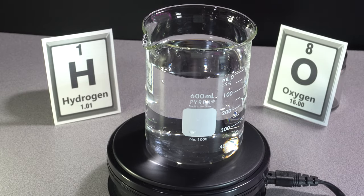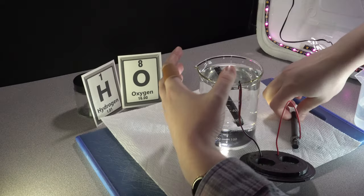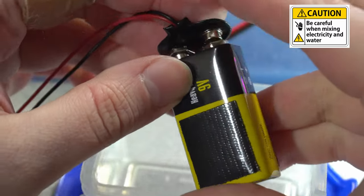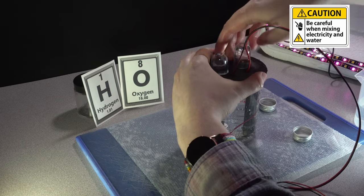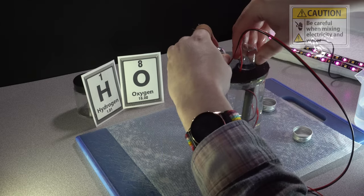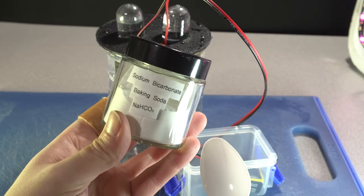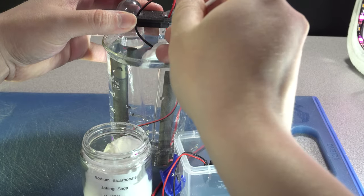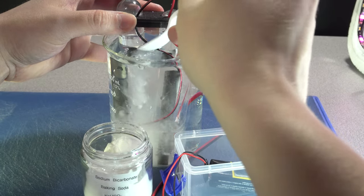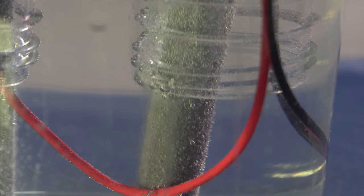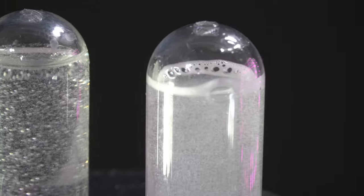We can actually split the water back into hydrogen and oxygen by using electricity. In this case, using a 9-volt battery attached to two graphite rods. We do need to add baking soda to work as an electrolyte, and help the electrons flow through the solution. But pretty soon, we can see bubbles appearing on our carbon rods, and start to fill up our test tubes.